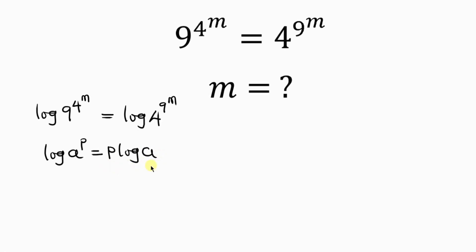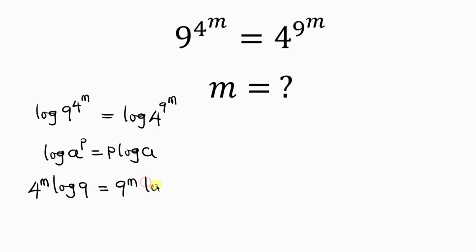We're going to apply this to both sides. On the left hand side, our exponent is 4 to the m, so this will be 4 to the m times log 9. On the right hand side, the exponent is 9 to the m, so we write 9 to the m multiplied by log 4.